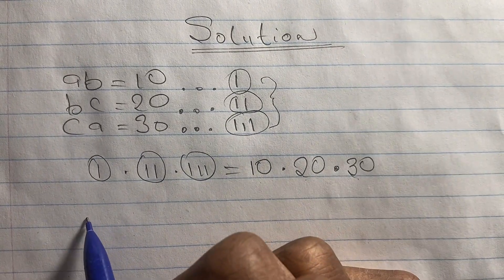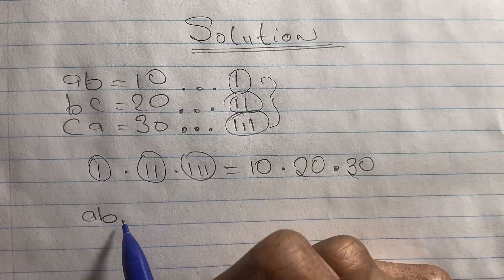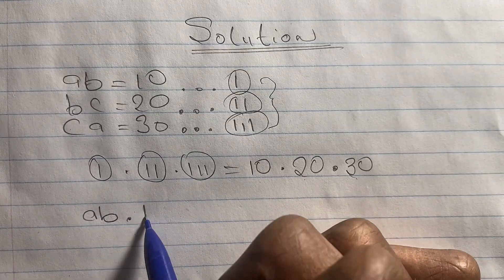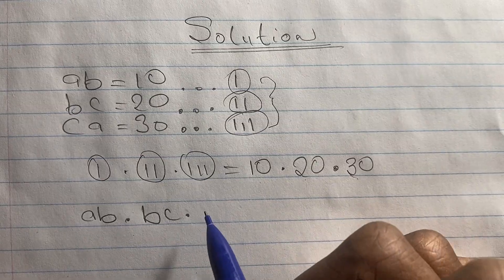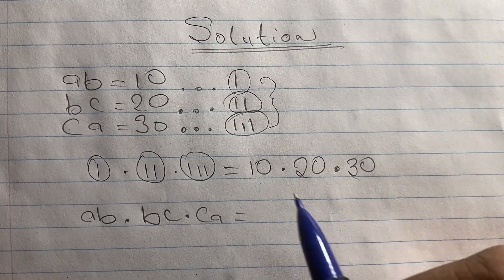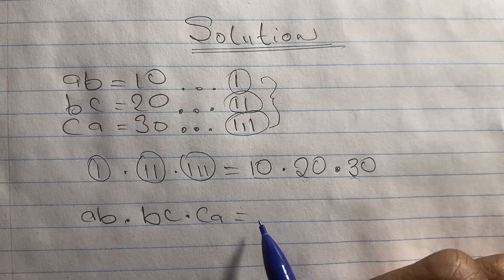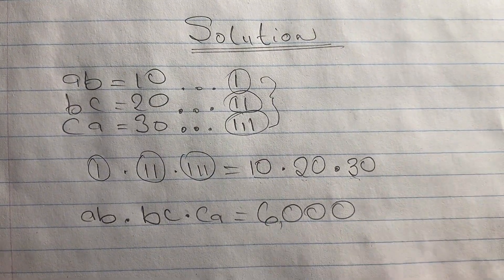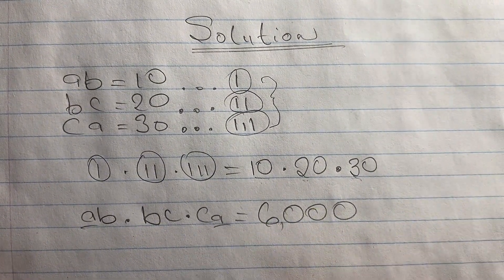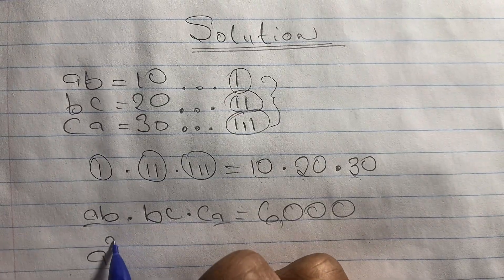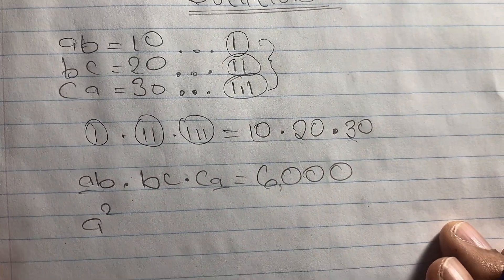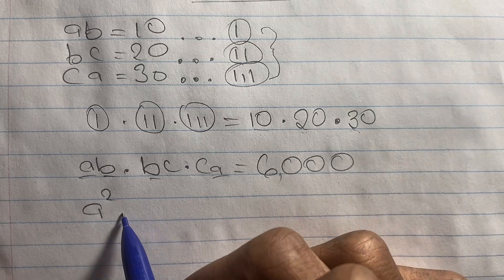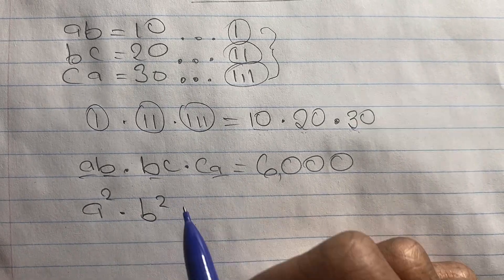So in equation 1, the value of a is the same as in equation 3, and the same is true for b and c. So if we multiply a times a, b times b, c times c, the result is 10 times 20 times 30, which is 6000. And since multiplication is commutative, we can simplify by grouping a with a, b with b and c with c, and the product is still 6000.